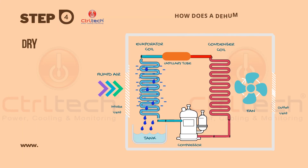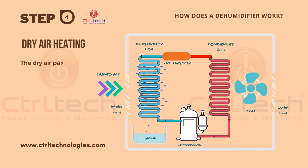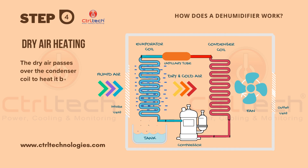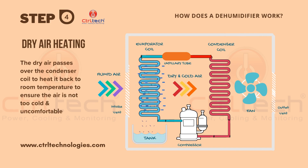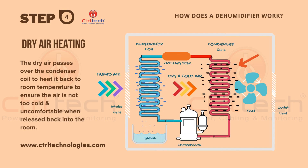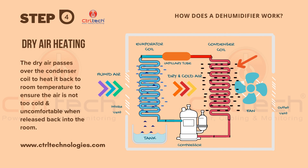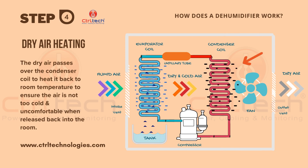As we saw in stage two, during the condensation process dry air is generated, but this dry air is very cold and it is not suitable to release very cold air back into the room. Hence, it is passed over the hot condenser coil to heat the air back to room temperature so that the room climate remains comfortable.